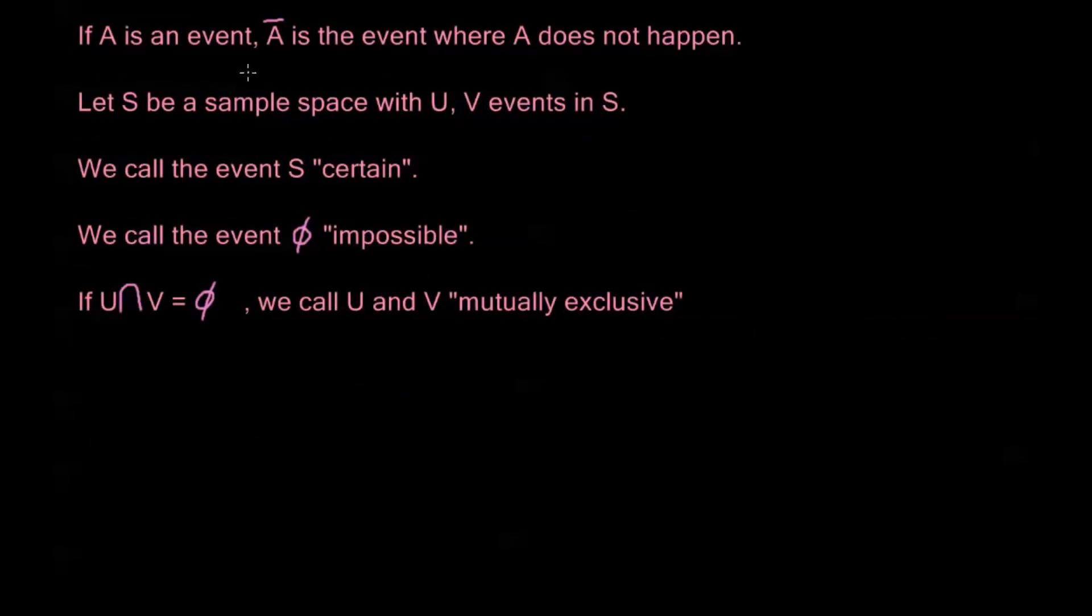Now if A is an event, then A complement is the event where A does not happen. So if you remember all of our set theory, this first statement should make perfect sense. If this doesn't make sense to you, review what A complement means and then take that in the context of A being an event. Now of course here A complement is going to mean the complement of A in our universe and our universe is going to be the sample space, right?